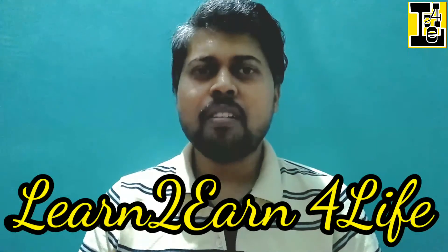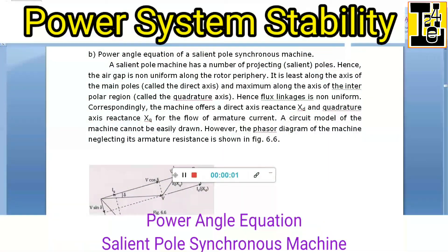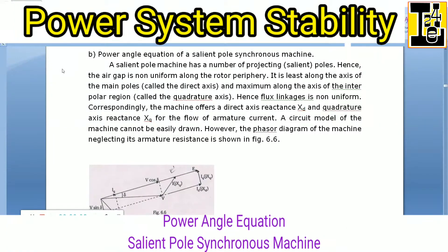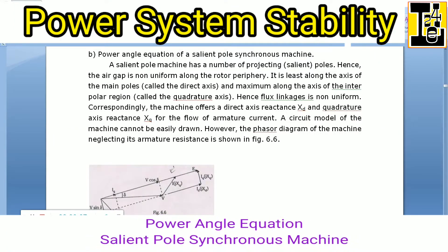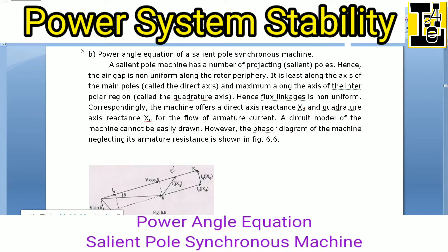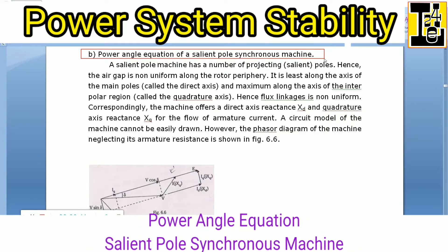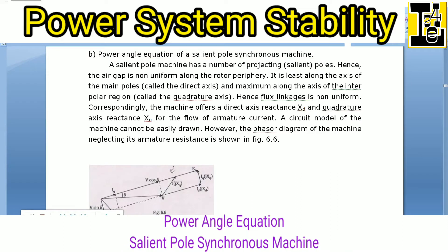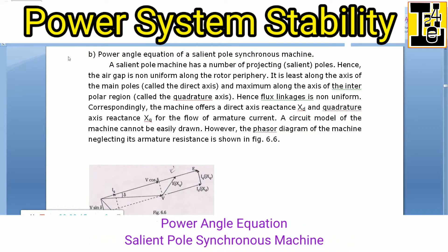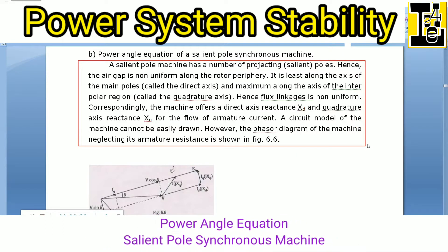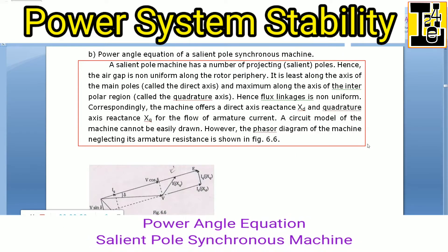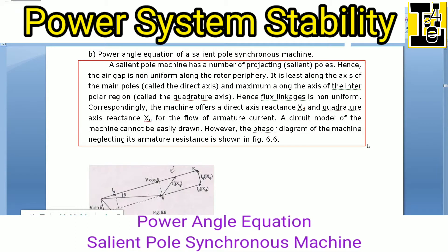Hello everybody, you are watching the channel Learn to Earn for Life. Let us derive the power angle equation for a salient pole synchronous machine. A salient pole machine has a number of projecting or salient poles. Hence the air gap is non-uniform along the rotor periphery.